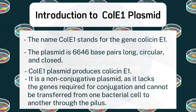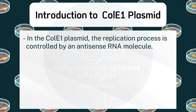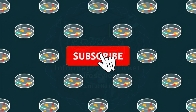It is a non-conjugative plasmid, as it lacks the genes required for conjugation, and cannot be transferred from one bacterial cell to another through the pilus. In the ColE1 Plasmid, the replication process is controlled by an antisense RNA molecule.